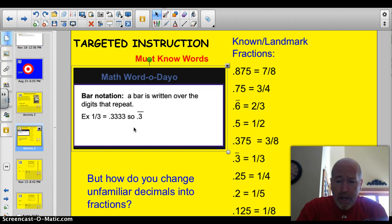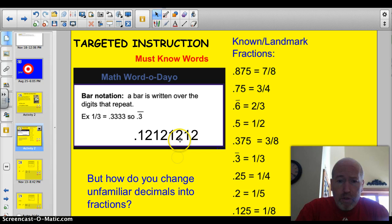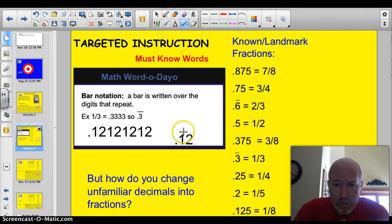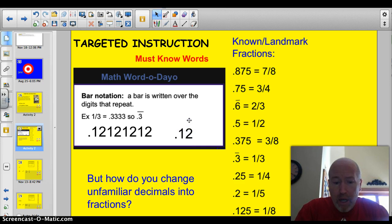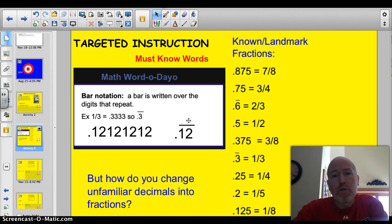I'm going to do one other example. If your pattern was 0.12121212, you could also then take and just write that as 0.12 and put a bar over the top of that 2. You just put it over the two digits that repeat or three digits or whatever.